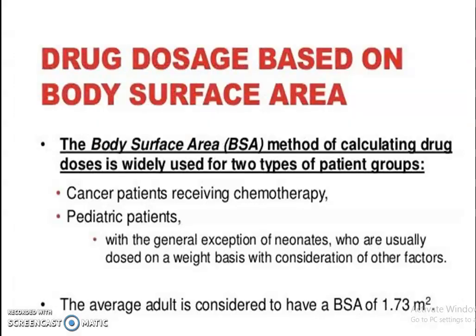We will see how to calculate body surface area. Body surface area is a standard method for calculating drug doses, and it is usually used in two types of patient groups: cancer patients receiving chemotherapy, and pediatric patients — except neonates, for whom the usual dose is based on weight and other factors.